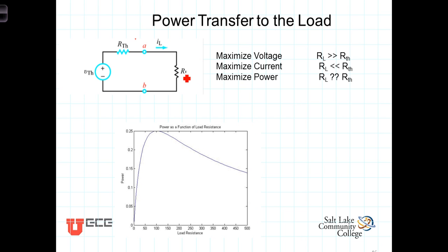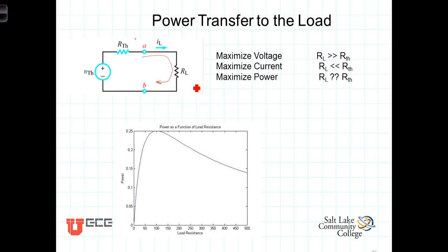The larger R_L is, the greater the voltage delivered to R_L will be. So if we're trying to maximize the voltage, we want R_L to be as much larger than R_Thevenin as we can get it. On the other hand, if our intention is to maximize the current, then by making R_L as small as possible, we will maximize the current. So: R_L big, we maximize voltage; R_L small, we maximize current.